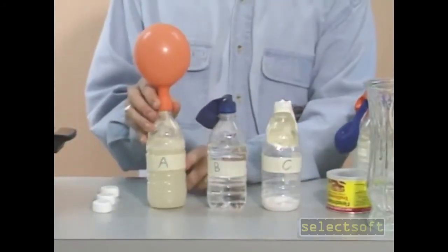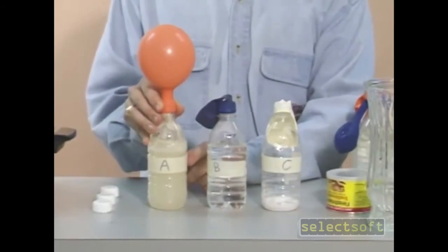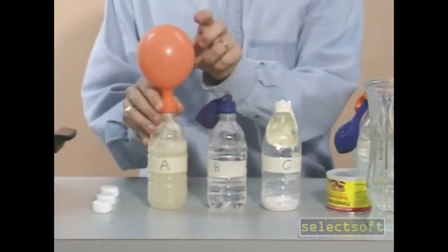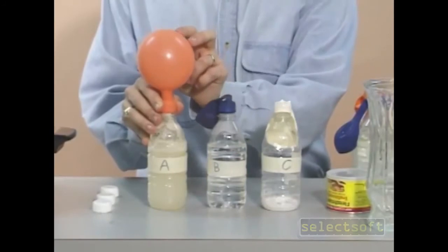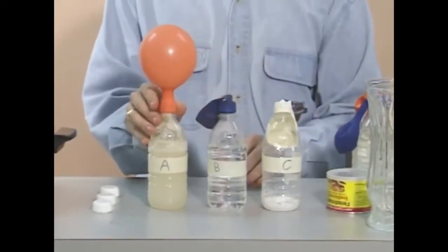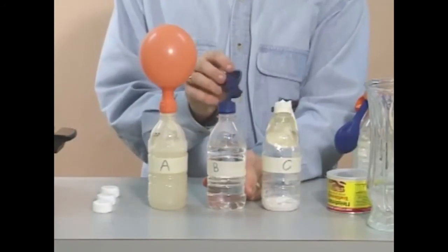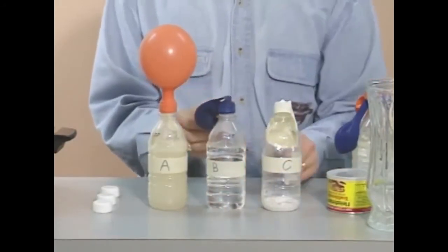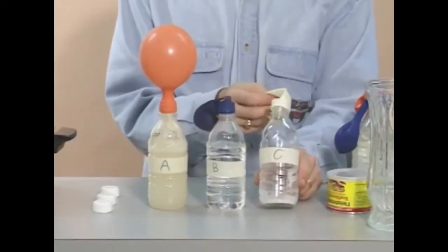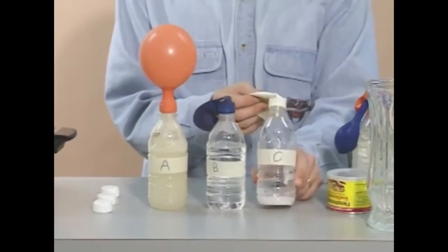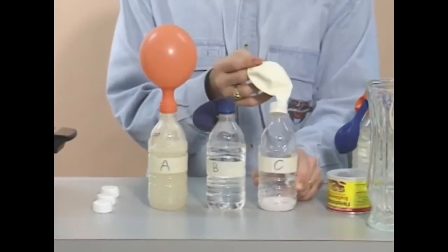You'll see that bottle A, which had water, sugar and yeast in it, has generated some gas and filled up its balloon. Bottle B, which just had sugar and water, its balloon is empty. And bottle C, which has yeast and sugar but no water, its balloon is also empty.